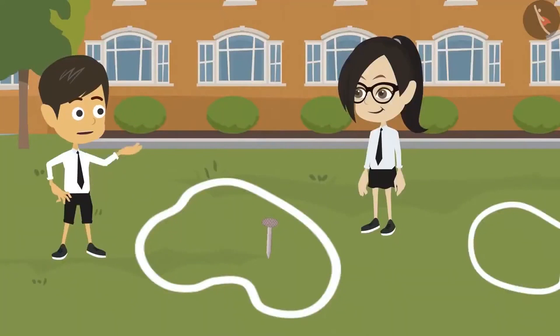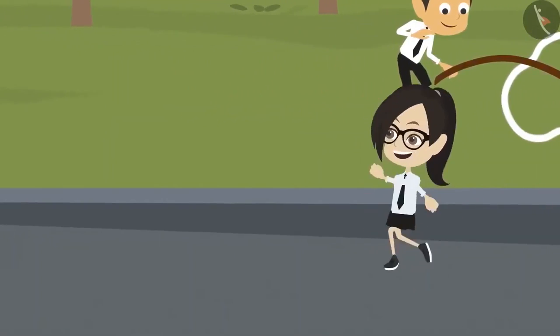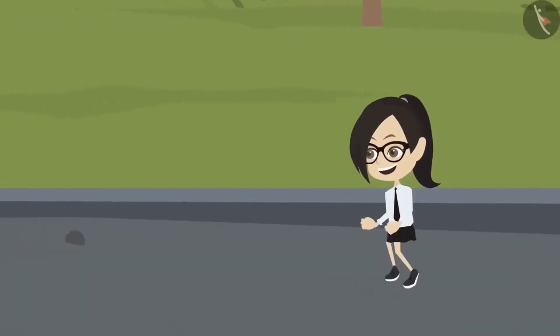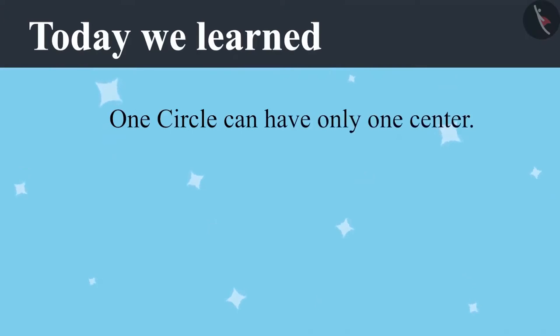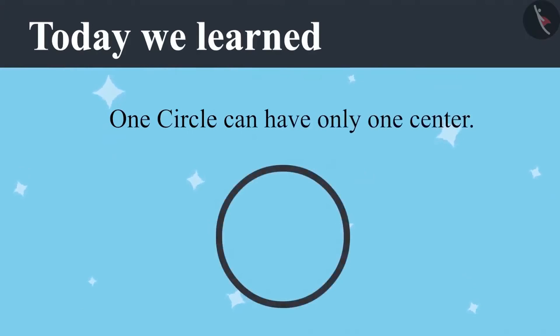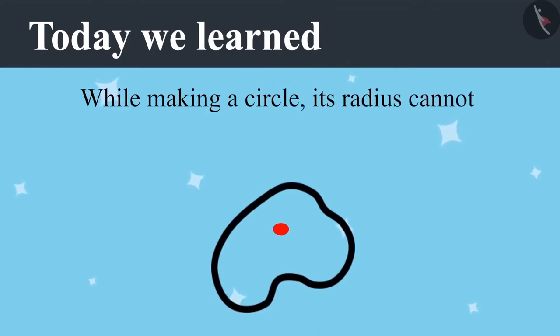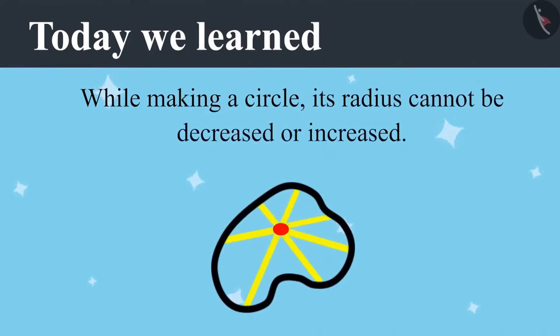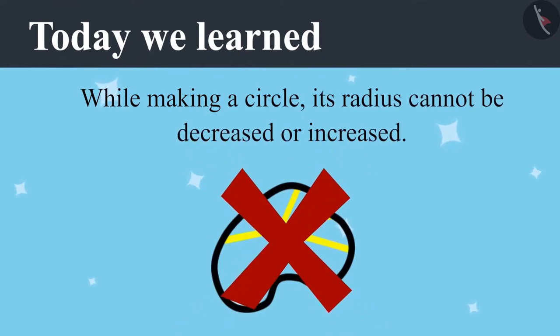Vandana told Ayushman that a circle can have only one center, and told Riyansh that while making a circle, its radius cannot be decreased or increased. If you pay attention in your class, you will not have to repeat your work like Riyansh and Ayushman.